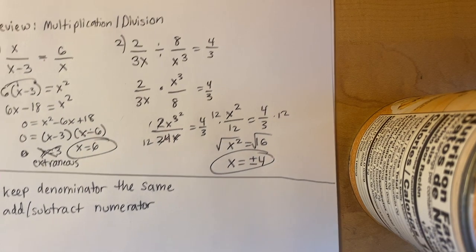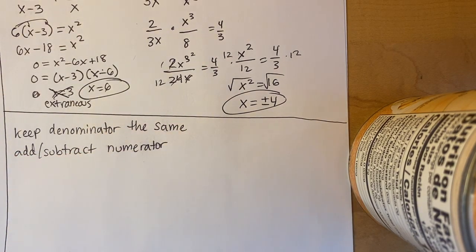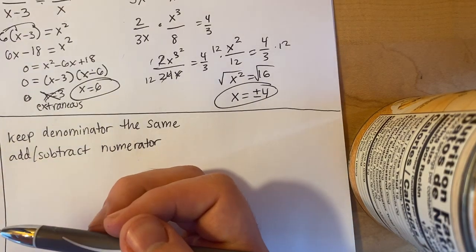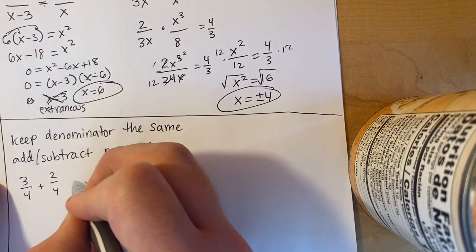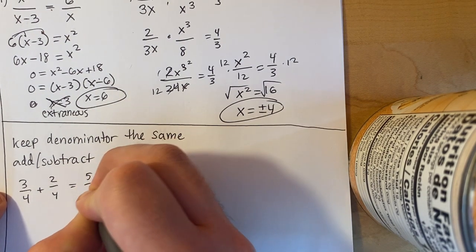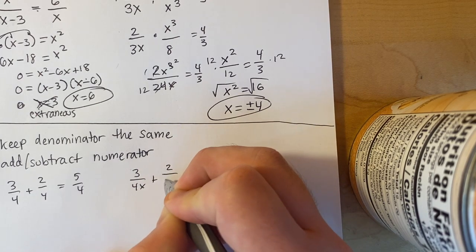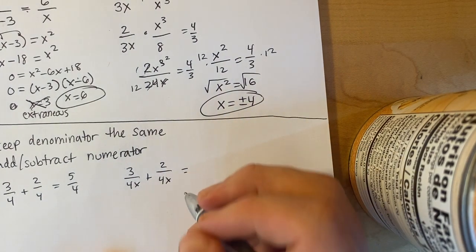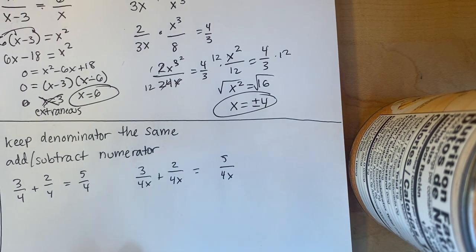When you're adding and subtracting, we're always going to keep the denominator the same and add or subtract the numerators. We'll do some examples with just numbers, then add variables. The first example is three fourths plus two fourths. We keep the four the same and add the three and the two, giving us five fourths. With variables: three over four x plus two over four x — don't get tripped up by the x. The same rules apply: keep the denominator four x and add the numerators. Not too bad.